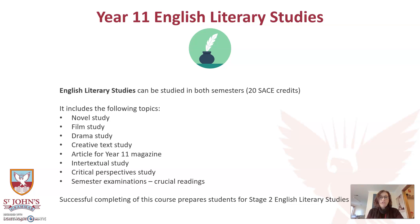Another option at Year 11 is English Literary Studies, and this takes a much more traditional look at literature with a heavy focus on the author's craft in poetry, drama and novel studies. Authors that are studied may include William Shakespeare, F. Scott Fitzgerald, and Sylvia Plath. While students will also create a text for the Year 11 Magazine, there is a significant emphasis on analysis, and they'll also have the opportunity to explore critical perspectives where they view texts through a different lens, such as a feminist or historical lens. Each semester has a 100-minute examination where students will answer questions on an unseen text, and students who choose this subject should be achieving a B-plus or higher in Year 10. This course prepares students for Stage 2 English Literary Studies or Stage 2 English.